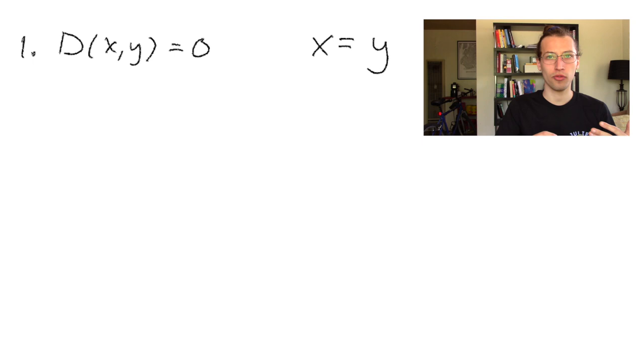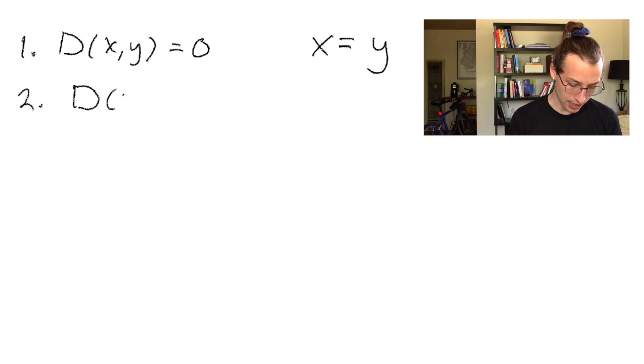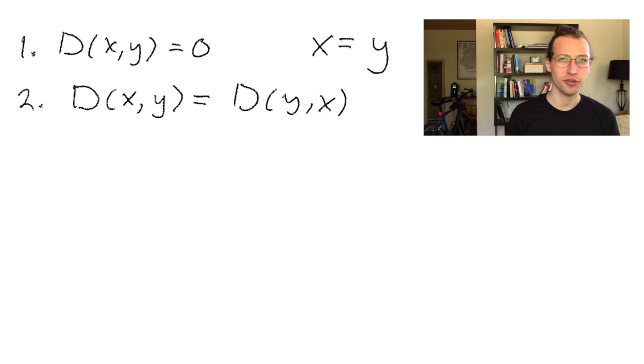Next, we require what's called symmetry, and that's that the distance from x to y equals the distance from y to x. Again, this is a pretty reasonable requirement. It'd be a little strange if within our system of numbers, distances work different one way from another. We usually just say, what's the difference between two numbers? It shouldn't matter which way you're looking.